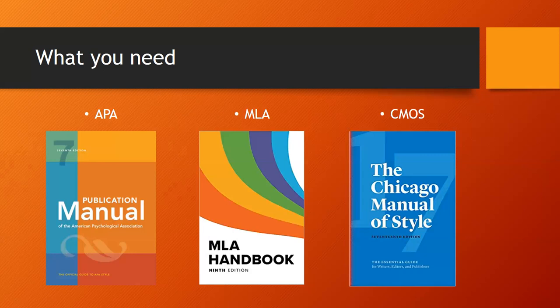Chicago Manual of Style is mostly used in the humanities — particularly history — and I've personally spoken to some professors who swear by Chicago and love using it. Some students say they could never go back from Chicago after starting to use it. It really just depends on what the discipline is and what your professor prefers.